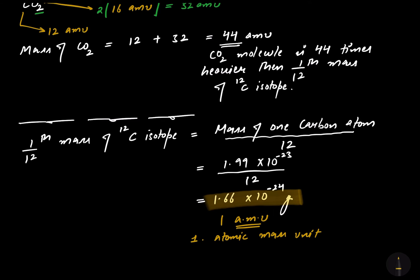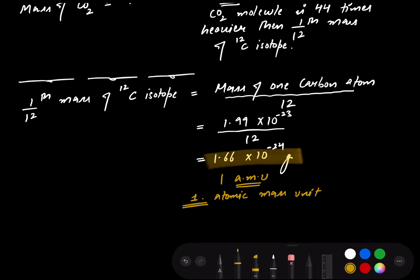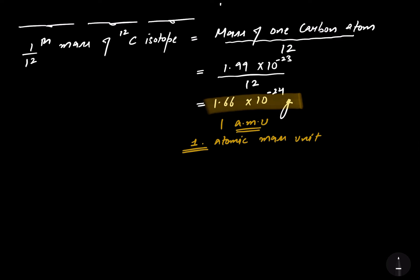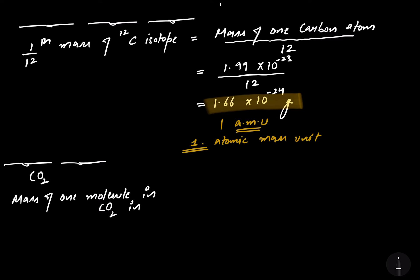I covered this in the previous lecture as well, but I have gone through it again to make you understand the value of 1.66 into 10 to the power minus 24 grams. Coming back to CO2: the mass of one molecule of CO2 in grams comes out to be 44 AMU, and using the value of 1 AMU, that is 1.66 into 10 to the power minus 24 grams.